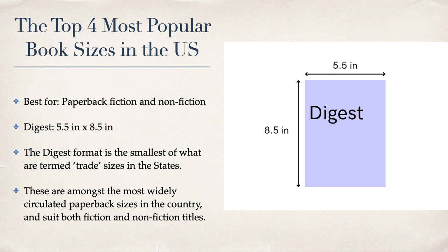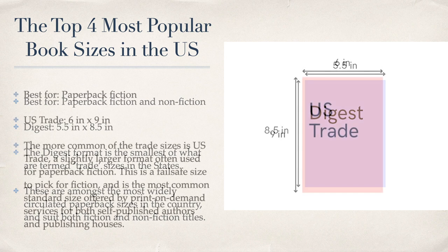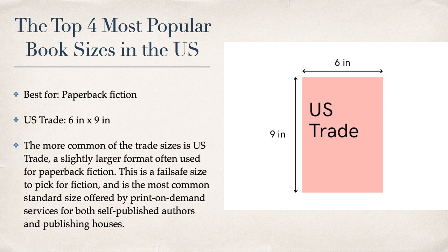It doesn't hurt to browse around bookshops and take a ruler to measure the sizes. The digest format - best for paperback fiction and non-fiction - is 5.5 by 8.5 inches. It's the smallest of what are termed trade sizes in the States. The third is US Trade - six by nine inches - best for paperback fiction, but personally I find them a bit large. If you're not sure, grab a ruler and a piece of A4 paper, or go down to the library and start measuring books to see what feels comfortable in your hands.